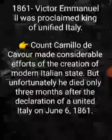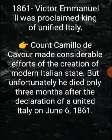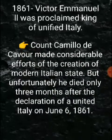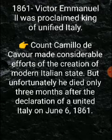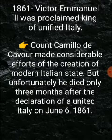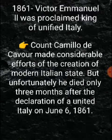In 1861, at the end of this process, Victor Emmanuel II was declared king of a unified Italy. Count Cavour made considerable efforts for the creation of the modern Italian state.